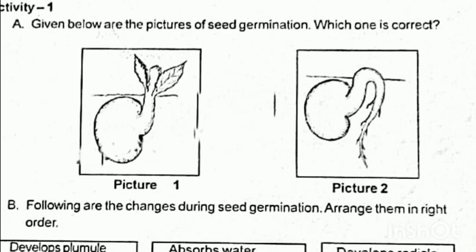Given below are the pictures of seed germination — which is correct? The same image is the same as a seed germination. That means we have a picture numbered 1.